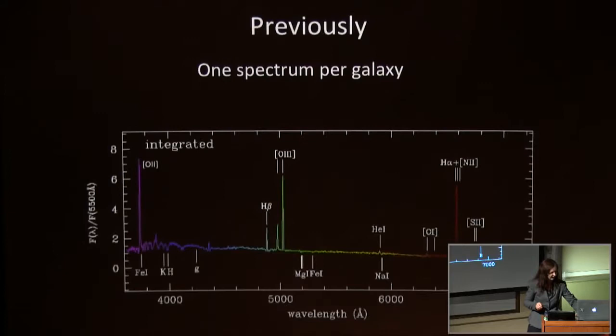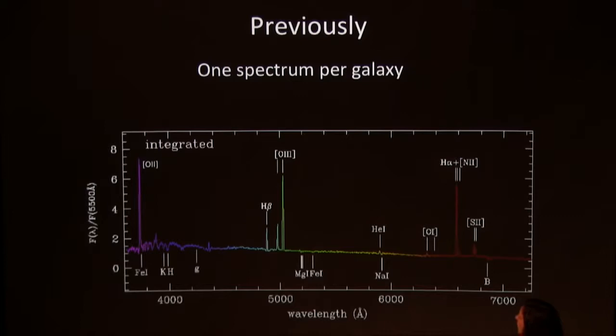This field has changed dramatically over the past 15 years. When I did my thesis, we got one spectrum per galaxy, one at a time, and did about 10 galaxies in a night. It took about six months of observing to get a sample of maybe 300 galaxies. Things have moved a long way since then, but we're still using spectra to obtain huge amounts of information from galaxies.